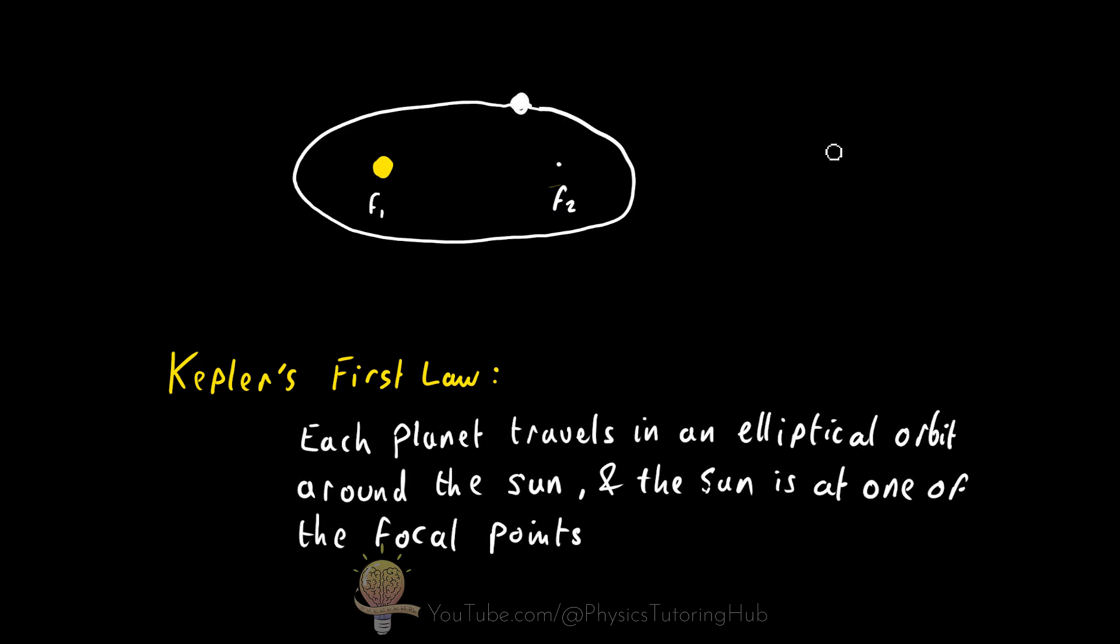If we bring these focal points closer and closer together, we'll get more of a circular orbit. And if both focal points are in the same place, we would get a perfectly circular orbit.